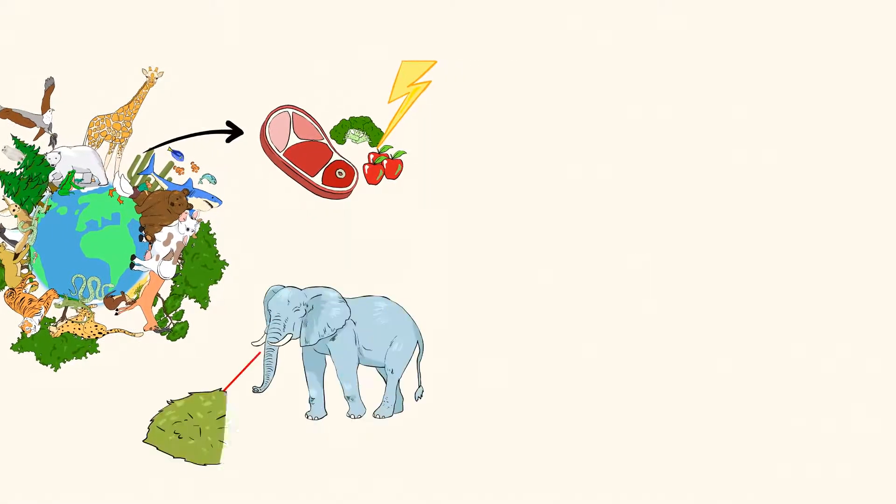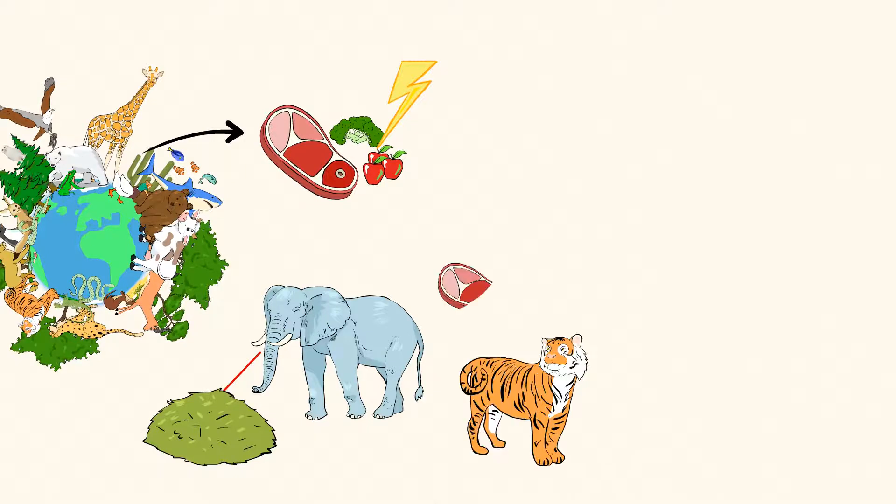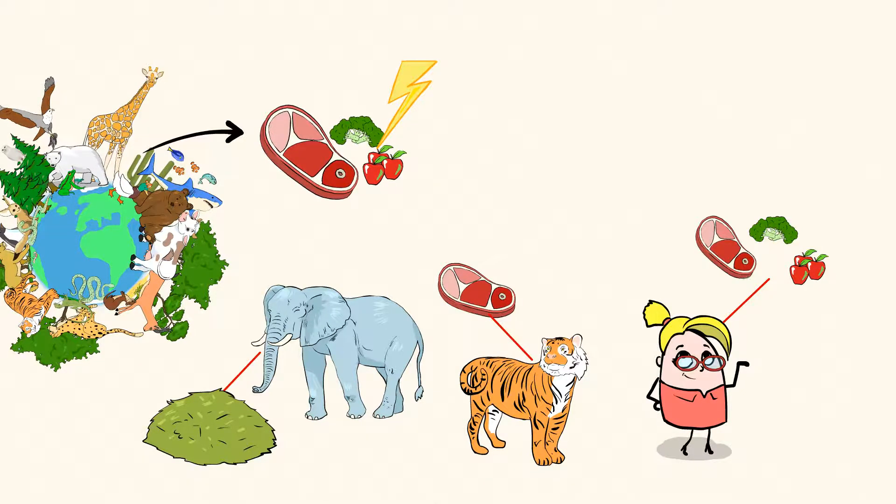Some animals eat only plants. Others eat meat. And there are others that eat both plants and meat.